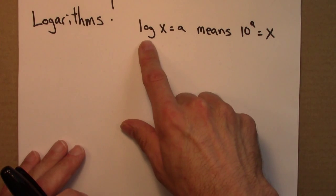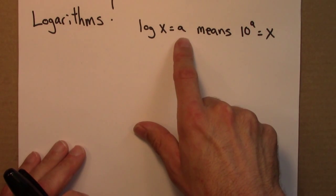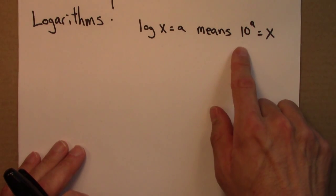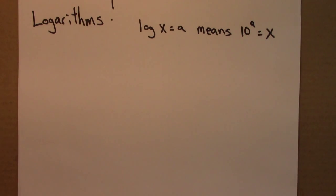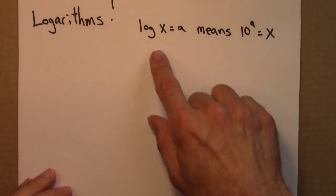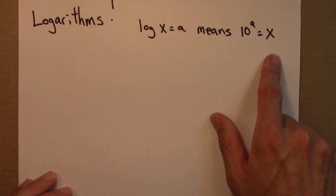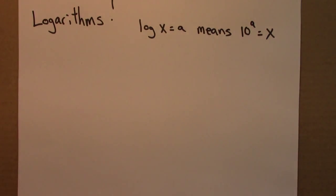We say that the logarithm of x equals some number a if 10 raised to the a power equals x. So that's the definition of a log. It's a slightly indirect definition, but that's the definition that I always go back to when thinking about what logs are.